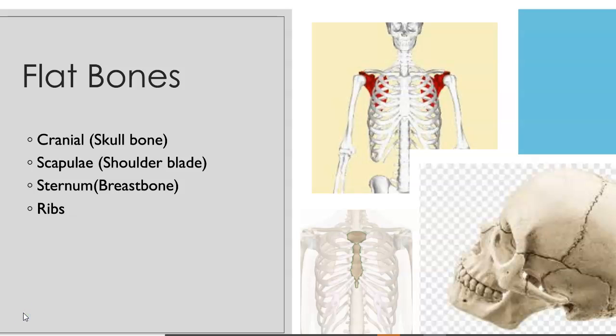Flat bones are plate-like with broad surfaces. These bones are typically thin but also curved. They serve as points of attachment for muscles and also serve to protect internal organs.